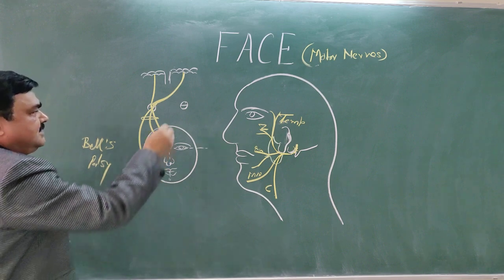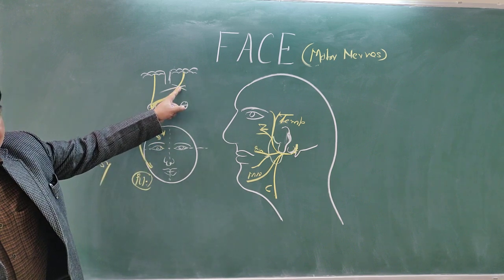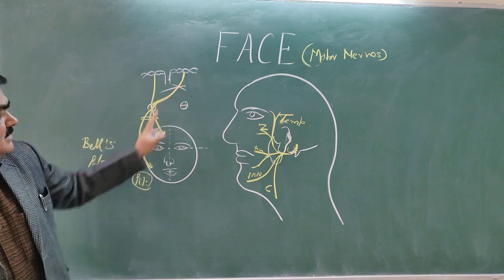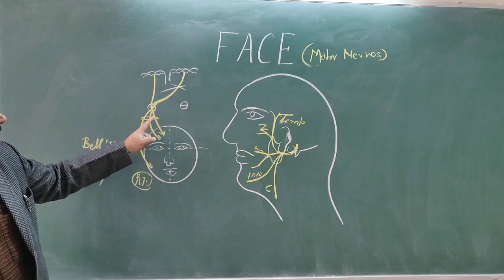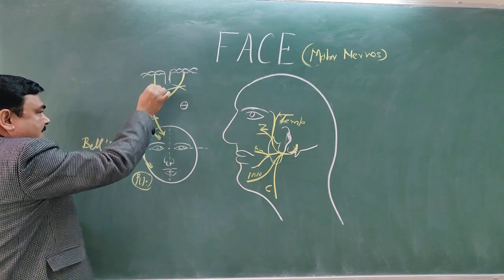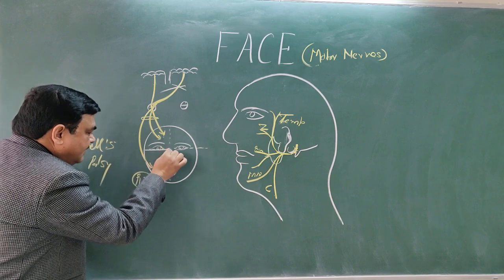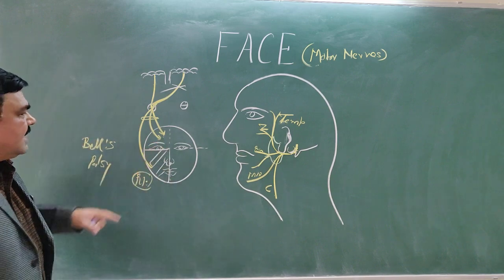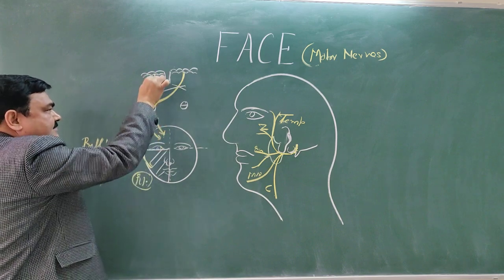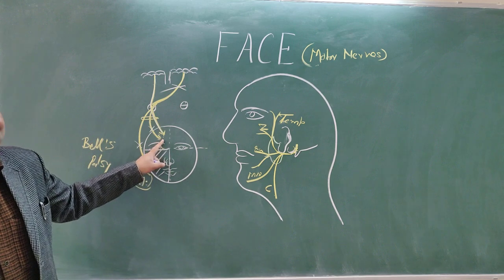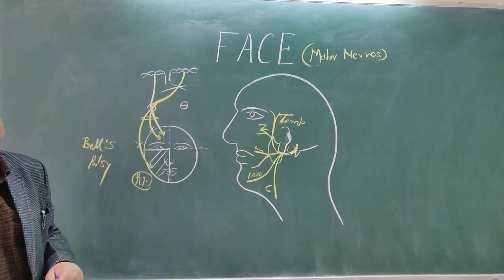In the case of a supranuclear lesion — where the lesion is above the nucleus — there is palsy on the opposite side. This is the side of the lesion on the left side, and palsy is on the right side. In supranuclear lesion, only the lower part of the face is affected. The upper part is spared because the same-side fibers supply the upper part. This is the difference between supranuclear and infranuclear palsy. Infranuclear palsy is known as Bell's palsy.